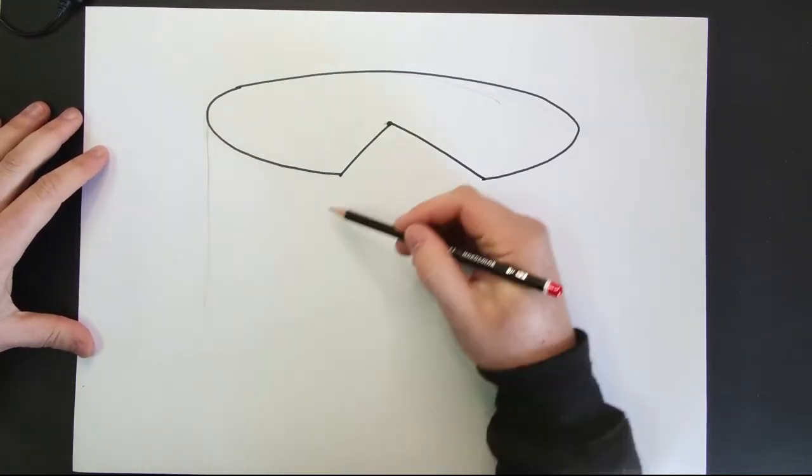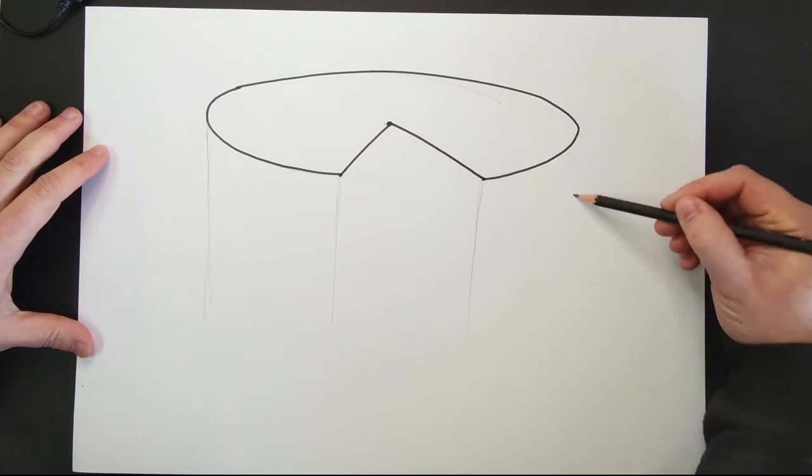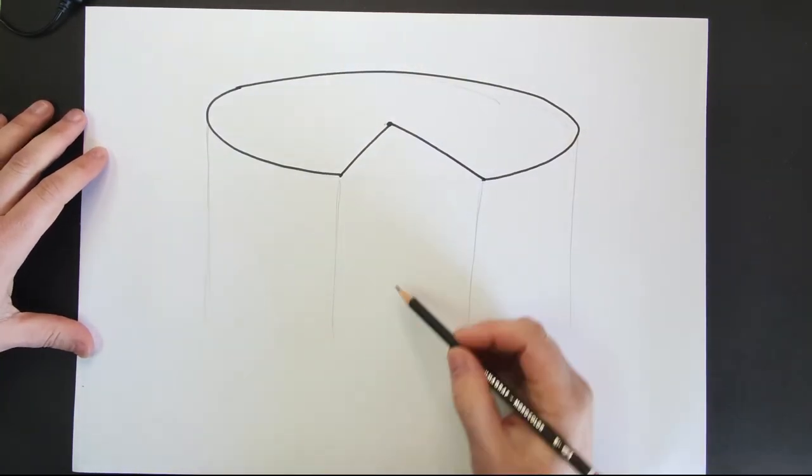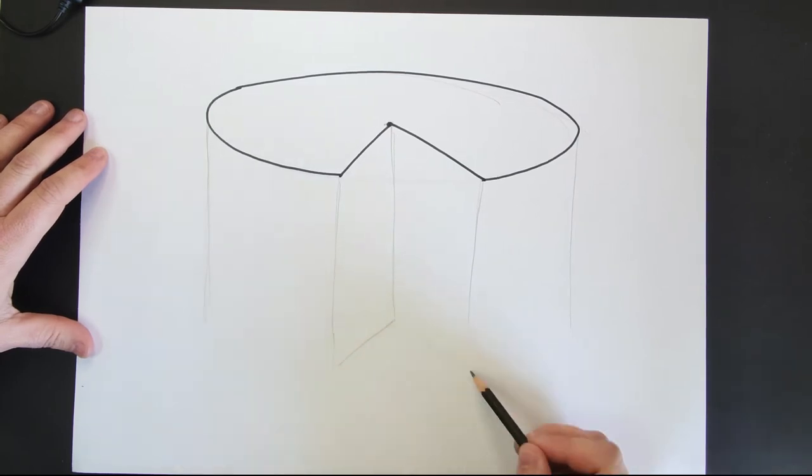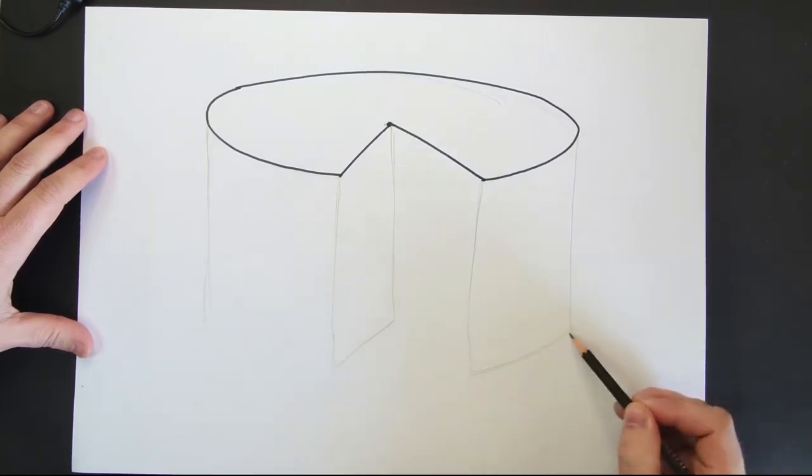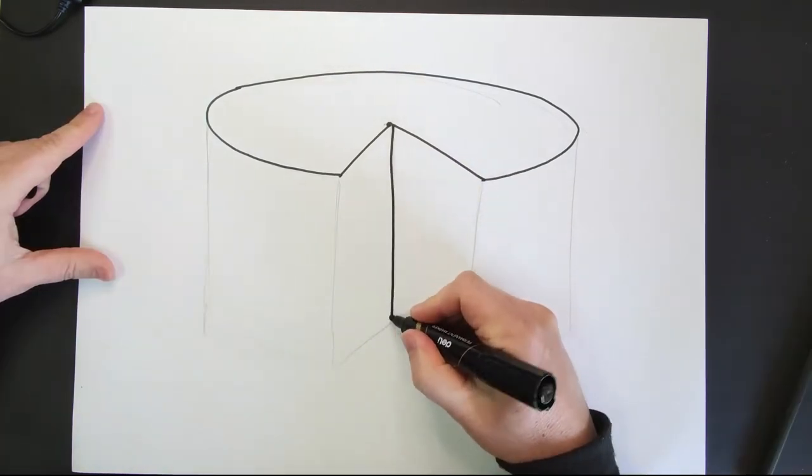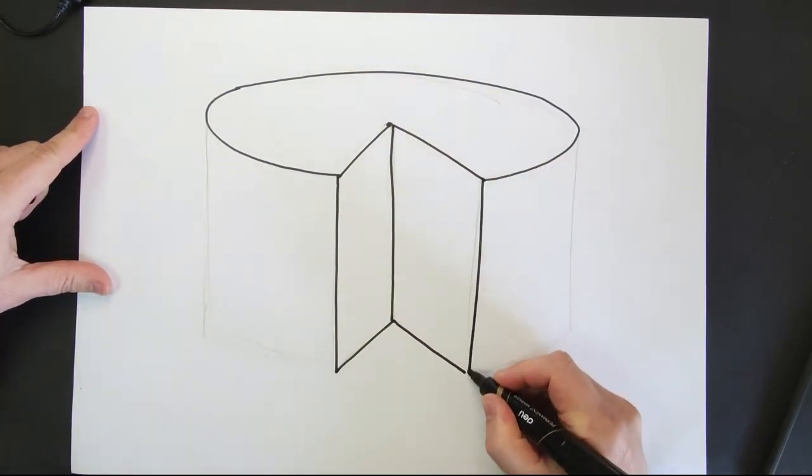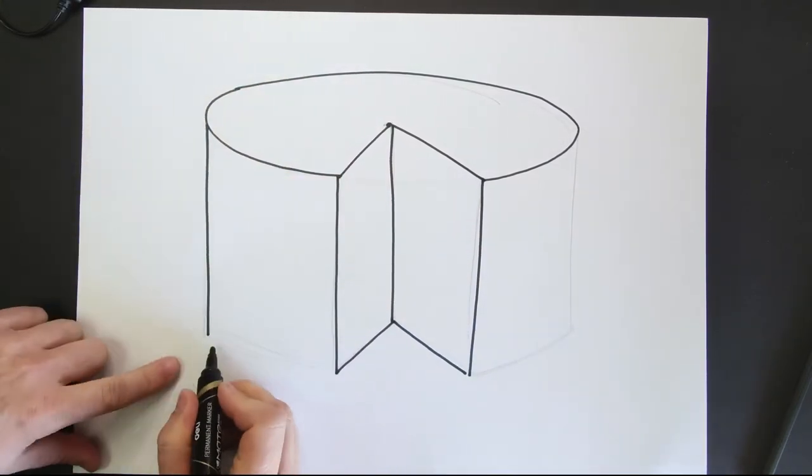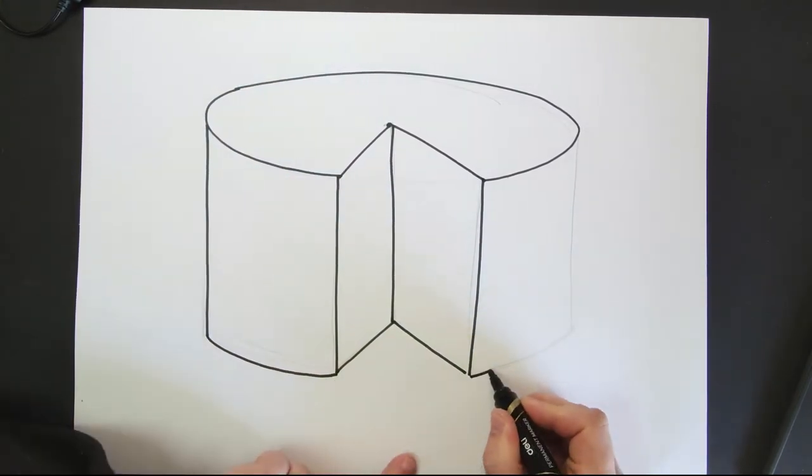Extend lines going down from the edges of the ellipse and the three corners of the triangle. Close the bottom of the triangle and ellipse with the same shapes that are at the top of the cake. Outline your cake in black marker. We're giving our cake some form or means giving it a three dimensional look.